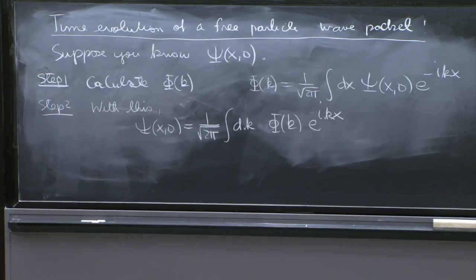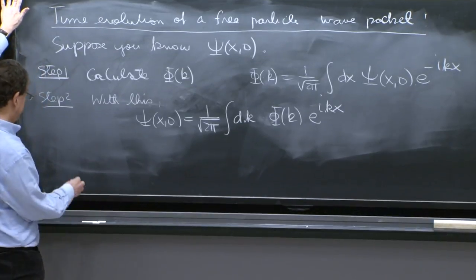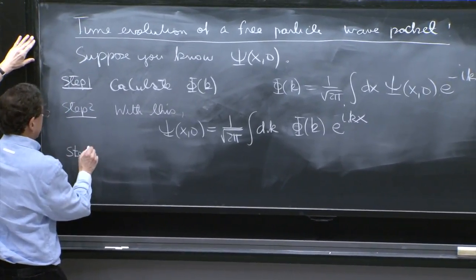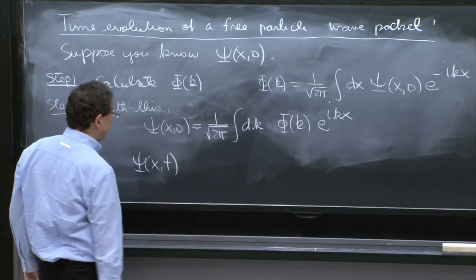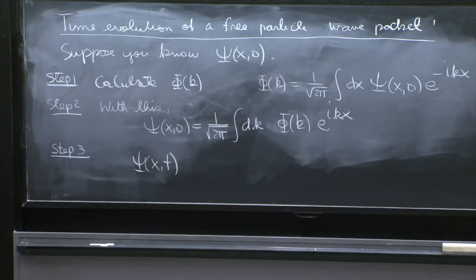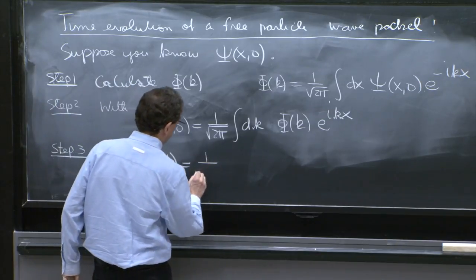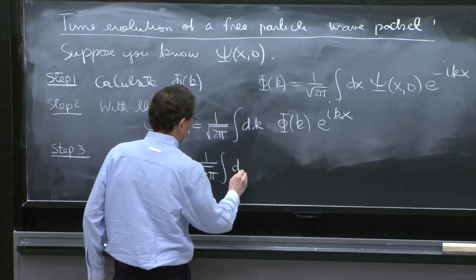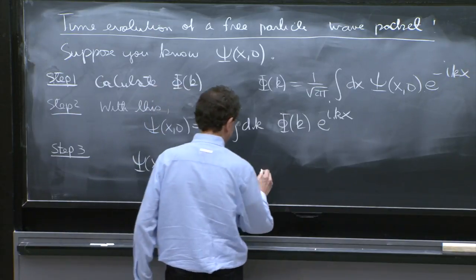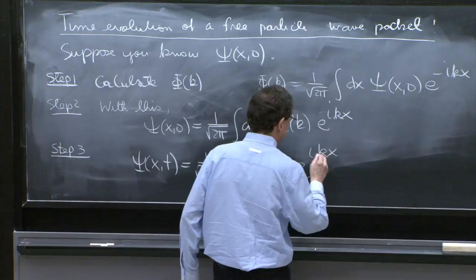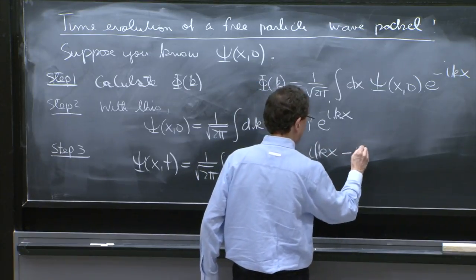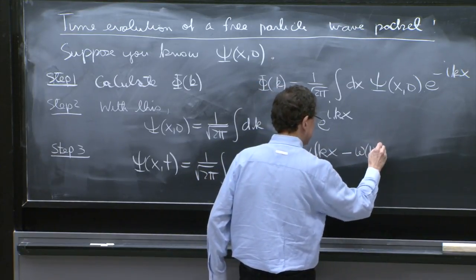Step three is the most fun step of all. You look at this and then you say, I know now what ψ(x,t) is. Evolving this is as easy as doing nothing. What I must do here is 1 over square root of 2π, just copy this, dk φ(k) e to the ikx, and I put here minus ω(k)t.